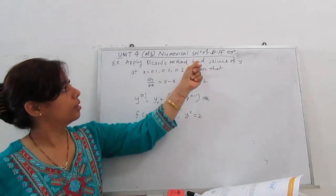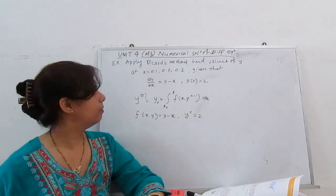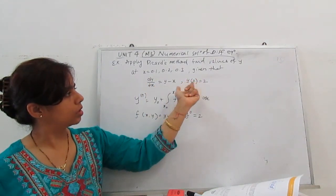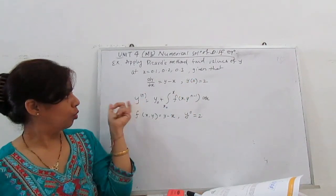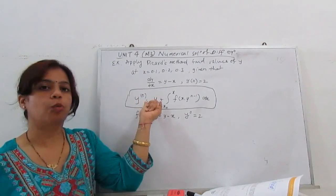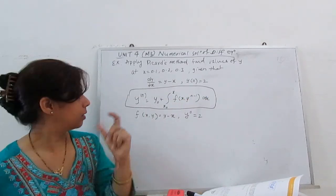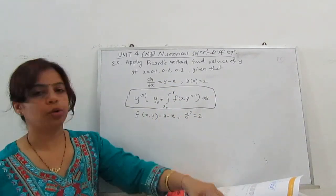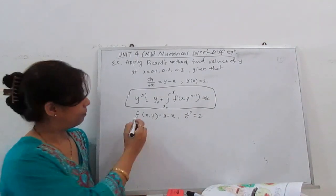Example: Apply the Picard method to find the value of y at x = 0.1, 0.2, and 0.3, given that dy/dx = y − x, with the initial condition y(0) = 2, meaning at x = 0, y = 2. The general Picard iteration formula is yₙ = y₀ + ∫(x₀ to x) f(x, yₙ₋₁) dx, where f(x, y) = y − x and y₀ = 2.